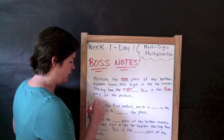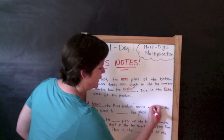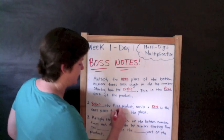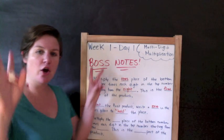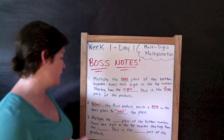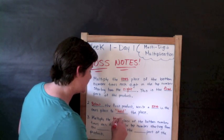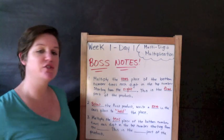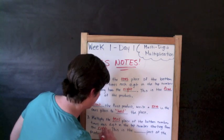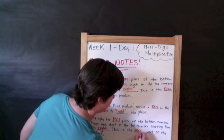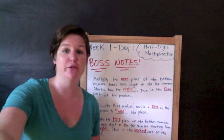Okay. Below the first part of the product, write a zero in the ones place to hold the place. You're going to hold it there. You'll see what I mean in a second. Step three. Multiply the tens place of the bottom number times each digit in the top number starting from the right, and this is the second part of our product. Alright, I got to write step four on here. I ran out of room. Just give me one second.